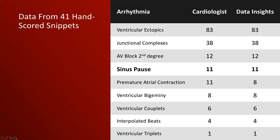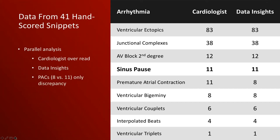The initial validation was from 41 hand-scored snippets evaluated in parallel by a cardiologist over-read and by Data Insights. The results were essentially identical, with one discrepancy in premature atrial contractions — cardiologist detected 11, Data Insights detected 8 — which can be considered normal background due to frequent respiratory sinus arrhythmia, especially in dogs. The three species evaluated were dogs, cynomolgus monkeys, and minipig.